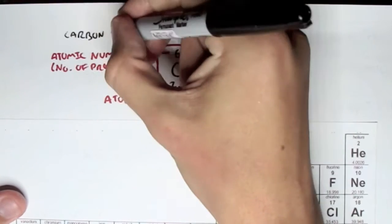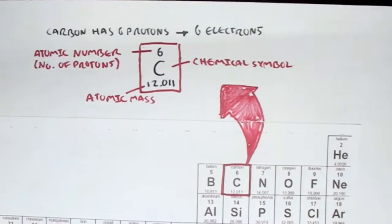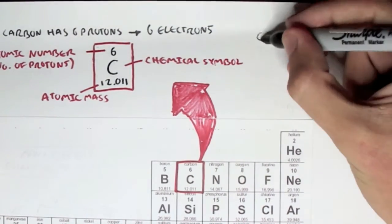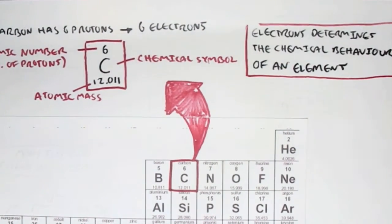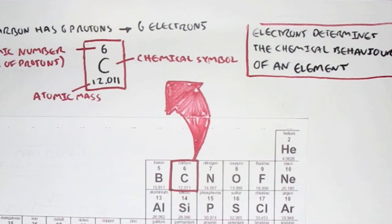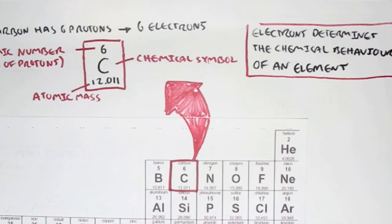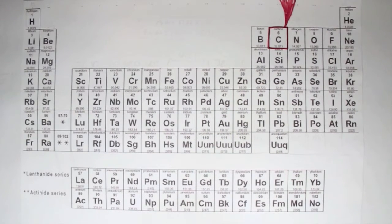For every proton, there is usually an electron. So if carbon usually has six protons, this would mean that carbon has also six electrons. Now these electrons are very important because electrons determine the chemical behavior of a particular element. Why does an electron determine the chemical behavior? Electrons are what forms bonds. Electrons occupy certain areas of space, of a particular atom, known as orbitals. Just know that an electron determines the chemical behavior of an element. Electrons are very important.